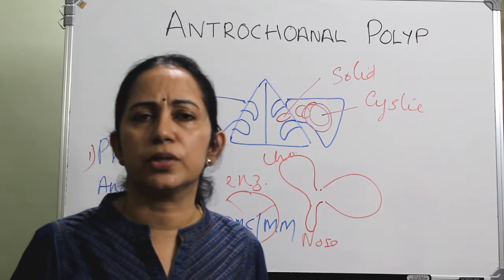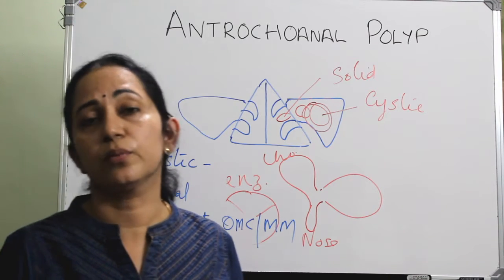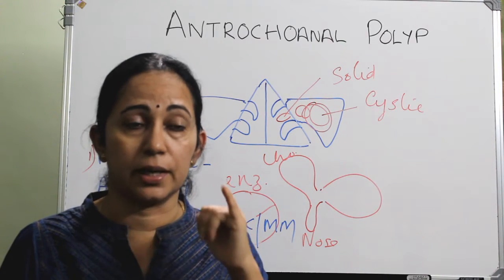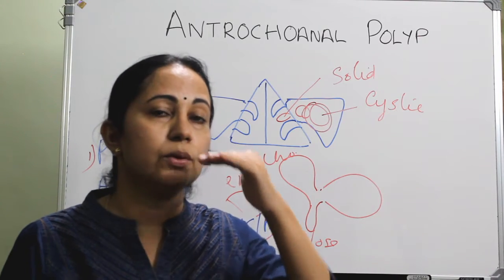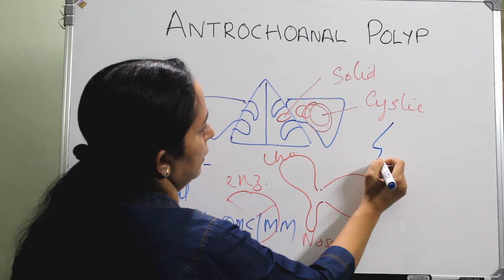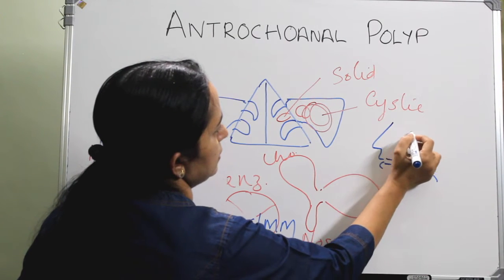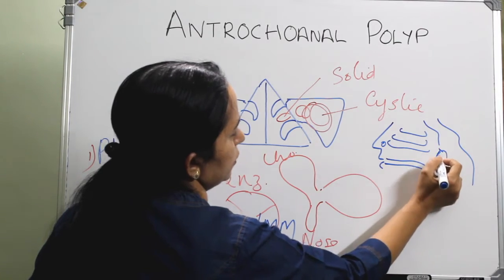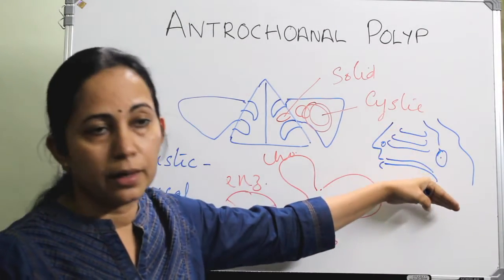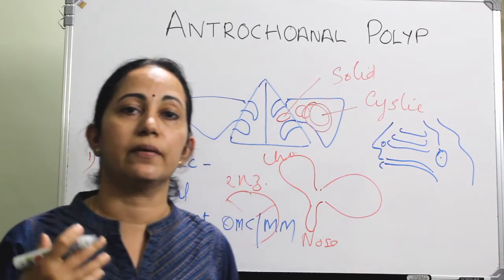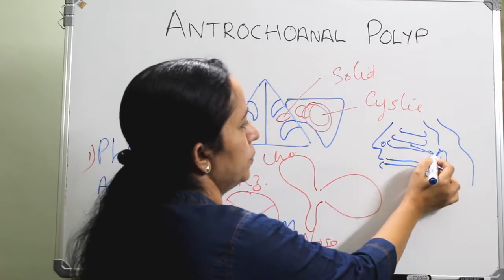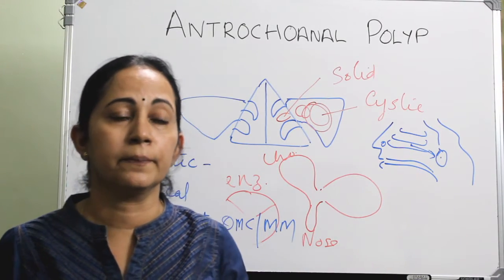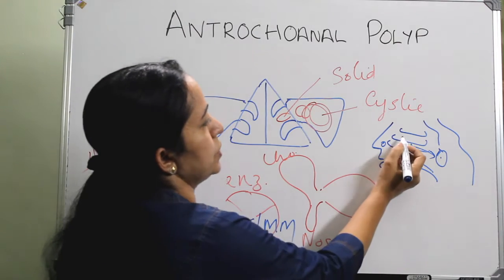Some examiners ask why the antrochoanal polyp goes posteriorly. There are four reasons. First, the posterior nose is more roomy compared to the anterior nose, so it goes posteriorly because the choana is more roomy. Second, because of gravity — the choana is at a slightly lower level than the anterior nose, so gravity pulls the polyp posteriorly.